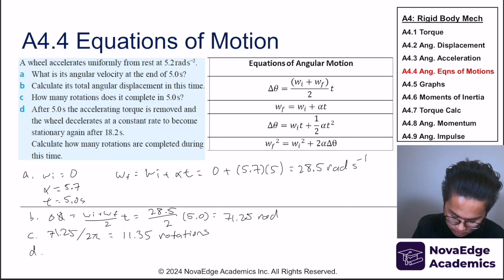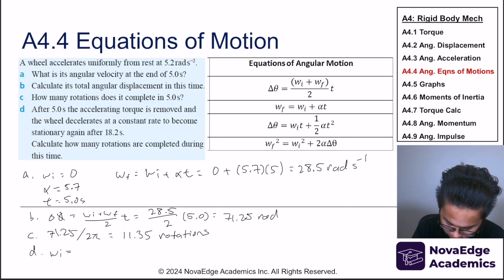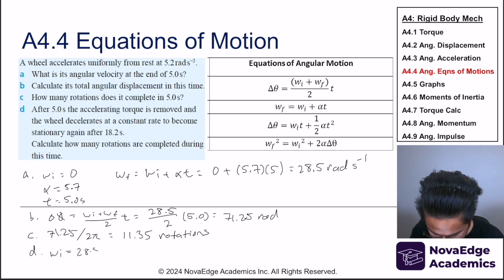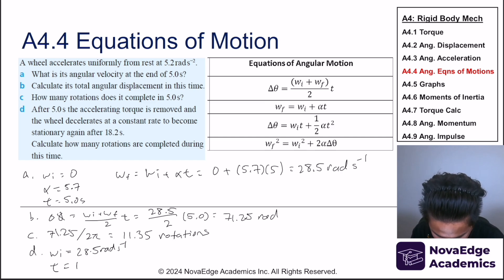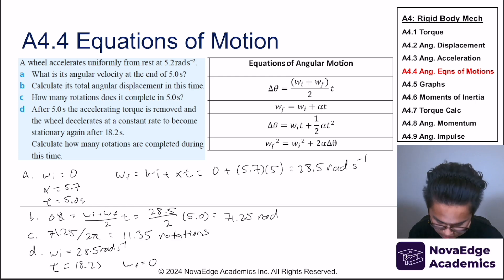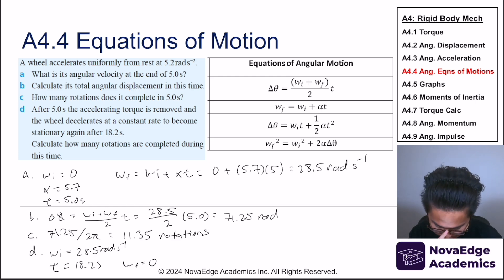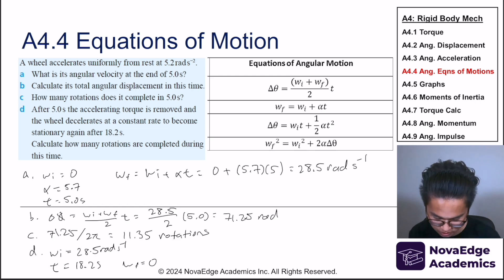For the deceleration phase: initial angular velocity is 28.5 rad/s, time is 18.2 seconds, and final angular velocity is zero. We need the total angular displacement, then convert to rotations.